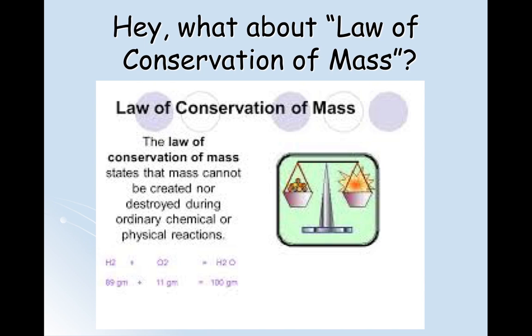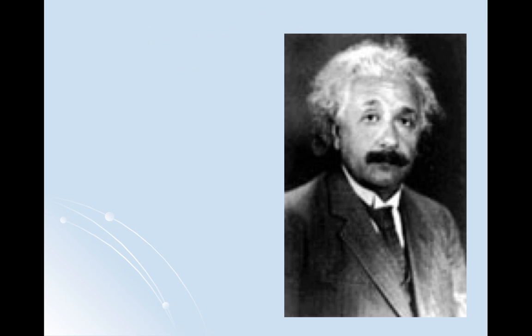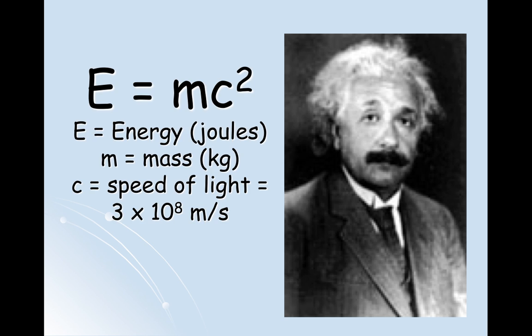Because this mass is converted to energy, this famous guy — who you guys all recognize — came up with a formula that enables us to quantify that amount of energy based on the amount of mass that's lost. This is a pretty famous formula that I bet you guys have heard of before. The formula E equals mc² is what's used to calculate the amount of energy given off based on the amount of mass that goes missing from a nuclear reaction.